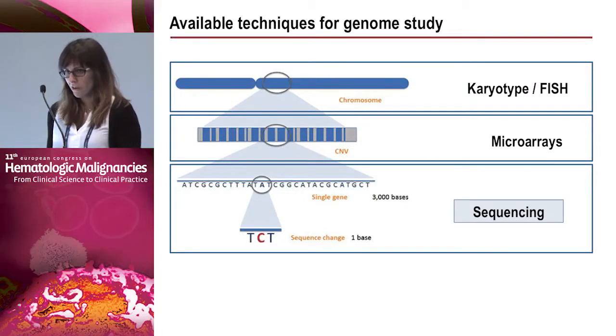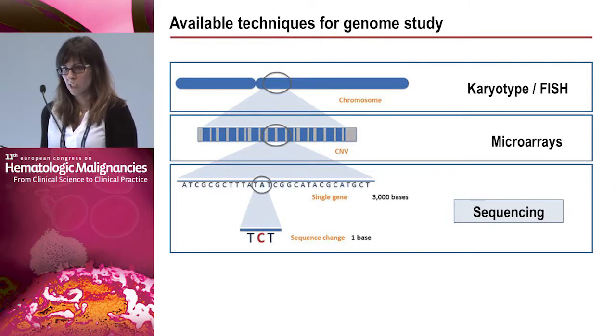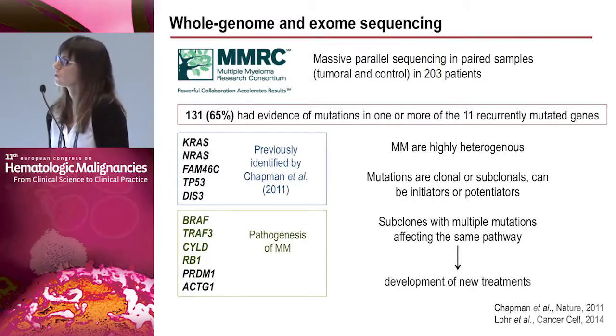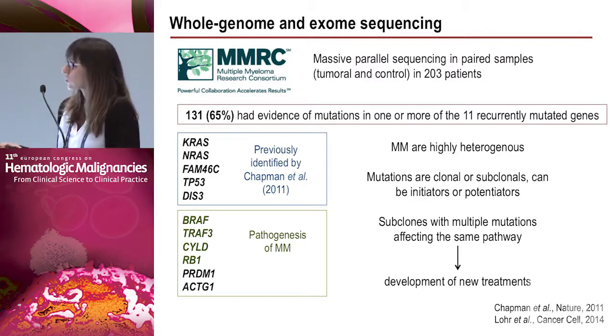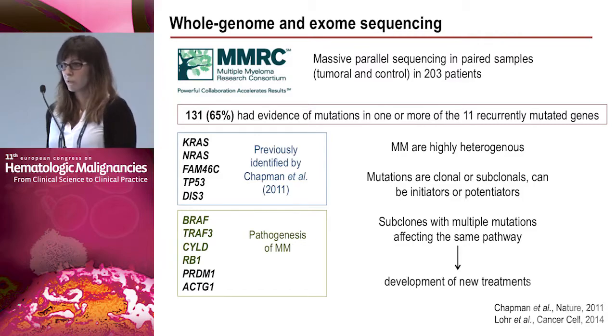We have different available techniques for genomic study: conventional karyotype and FISH, microarrays which allow chromosome study at high resolution across the whole genome, and sequencing — the newest approach — which allows study at gene level and nucleotide level. The Multiple Myeloma Research Consortium performed whole-genome and exome sequencing on more than 200 patients using parallel sequencing on paired tumoral and control samples from the same patient.